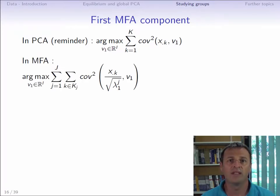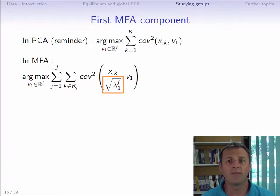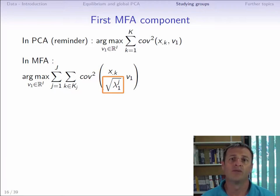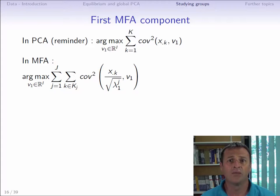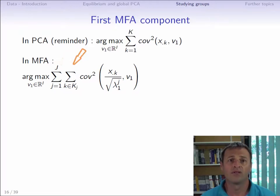As the MFA is a PCA on a weighted table, we can write the previous criterion in a way that shows the weighting used by MFA. Each variable xk is divided by the square root of the first eigenvalue of the group to which it belongs. We have to sum over all the variables, but since the variables are organized in groups, we can write the criterion by making a sum over the group appear and a sum over all the variables of the J-th group.